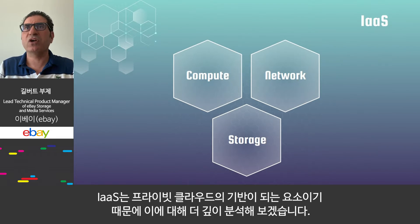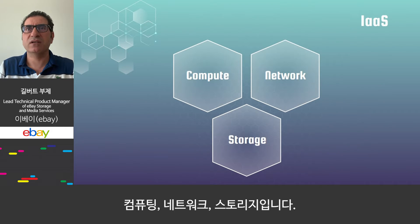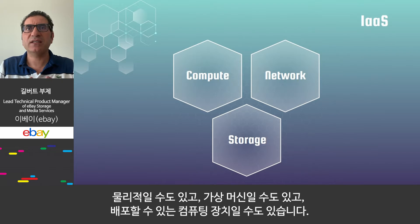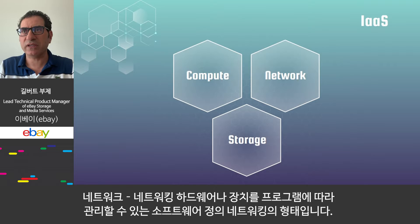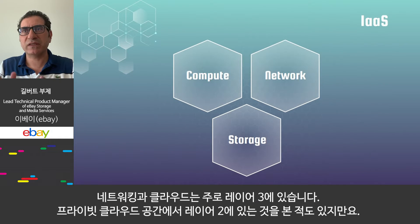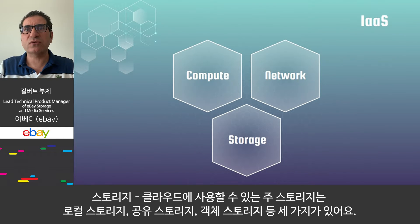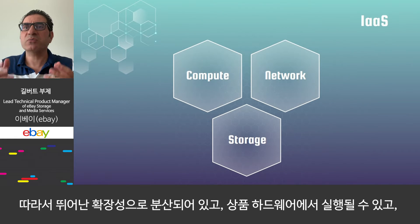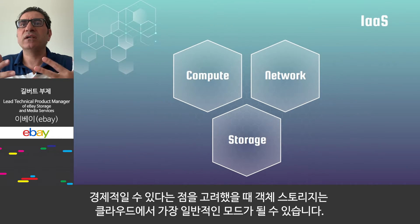As IaaS is the foundation block of the private cloud, I will drill down further on it. What are the main bricks of IaaS? Compute, network, and storage. Compute is an instance where an application runs in the cloud environment — it can be physical, a virtual machine, or a deployable unit of computing. Network is a form of software-defined networking enabling hardware or units to be managed programmatically; networking on the cloud is mainly on layer 3, though in the private cloud space I have seen solutions on layer 2 as well. Storage: three primary storage types are available — block storage, shared storage, and object storage. Block and shared storage are common in traditional data centers but struggle with scalability, so object storage became the most common mode in the cloud, given it's highly scalable, distributed, can run on commodity hardware, and can be cost effective.